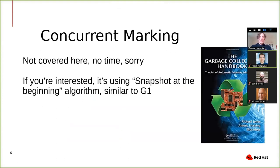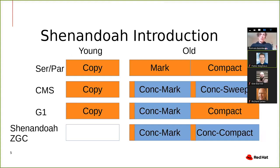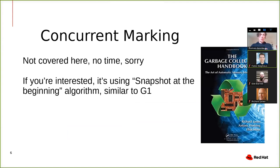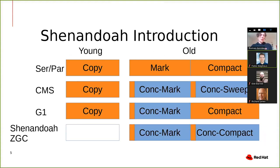Concurrent marking — I don't have time to cover this here, it's been talked about a lot. If you are interested, it's called Snapshot at the Beginning. This is what we use in Shenandoah, and it's similar to the marking phase in G1. If you want to know about this, look it up in the Garbage Collection Handbook. I'm mostly focusing on the concurrent compacting phase here.